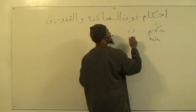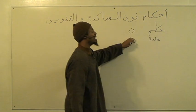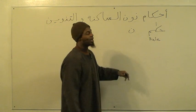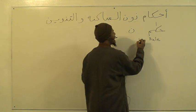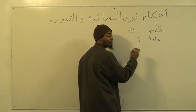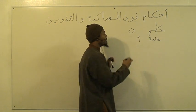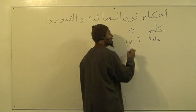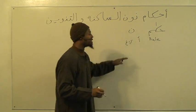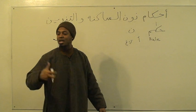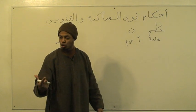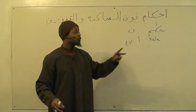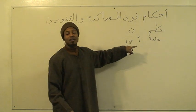Noon is the letter that is ma'roof — well-known, a letter from amongst the letters of the Arabic alphabet that starts off with alif. Depending on where you go, it might end off with ya, or it might end off with ghayn if you do an abjadiyah. Abjadiyah is: abjad, hawwaz, huttiyah, kaliman, sa'afas, kurishat, thakhith, dhadiqh — so it ends with ghayn.